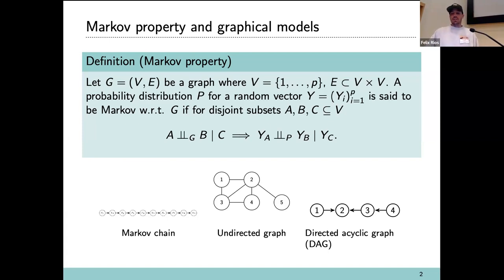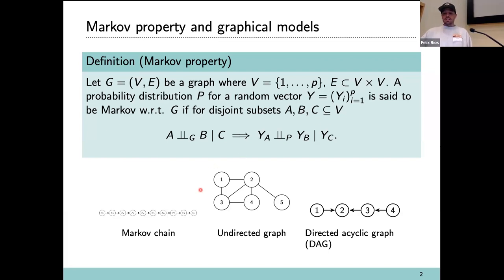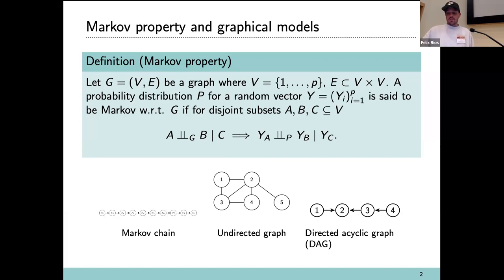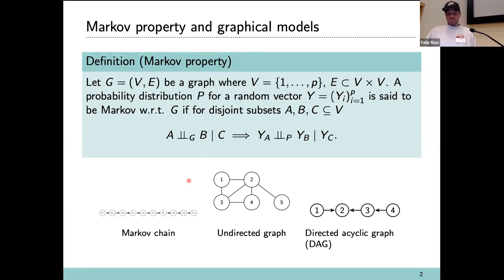In graphical models, you have a distribution and an associated set of random variables. You take the random variables and put them as nodes in the graph, and then you can read off conditional independence statements, like separation in the graph. There are different kinds of graphs — for example, undirected graphs or directed acyclic graphs. The separation notion is different in these kinds of graphs, so they encode different conditional independence statements. When a graph reveals some of the conditional independences of a distribution, you say the graph is Markov with respect to the distribution.